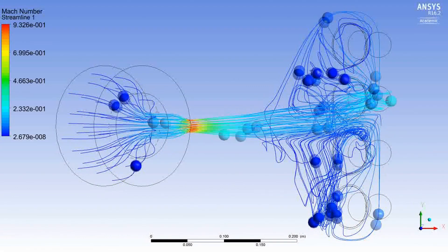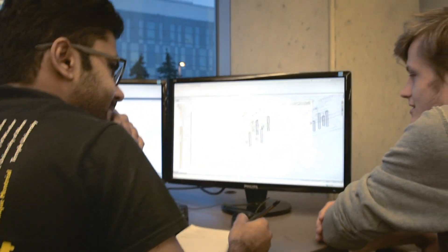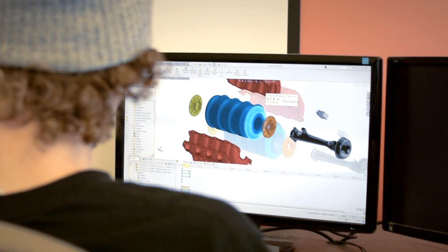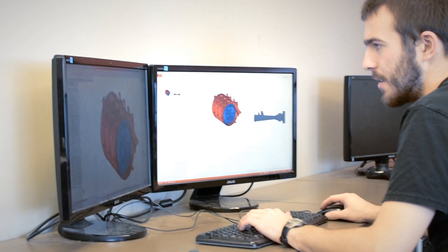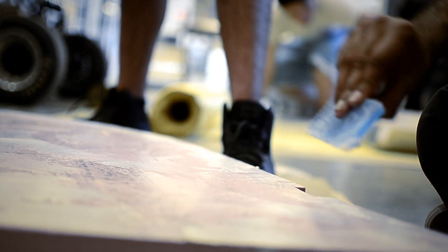And then from there we take those load cases and we bring them over to a mechanical simulation, and then we use that as the loading case, and we can look at the stresses induced from the fluid flow, and then we can iterate the design from there to try to get a good intake that doesn't cost us any extra weight, but is still robust enough to get us through competition and build a fast race car that performs well.